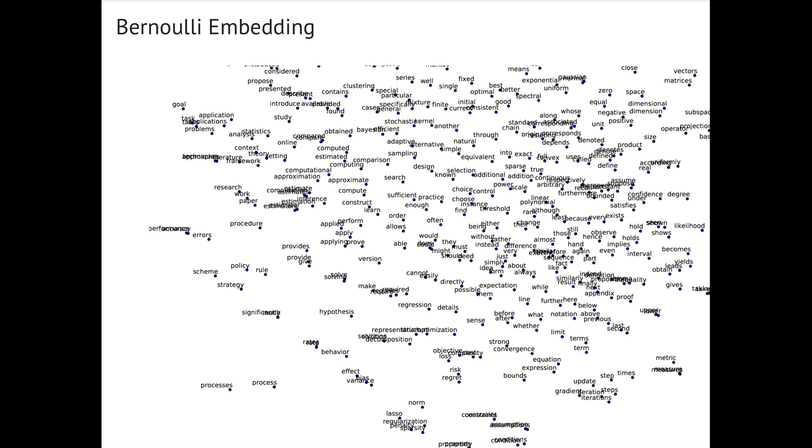Finally, here is a Bernoulli embedding on text from machine learning papers on the archive. The objective of the Bernoulli embedding resembles a regularized version of Word2Vec with negative sampling by Mikolov and co-authors.